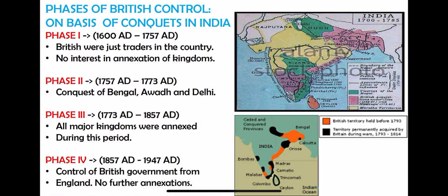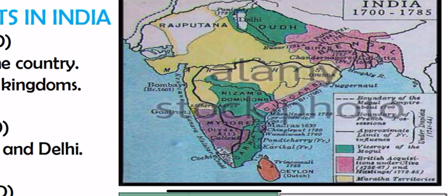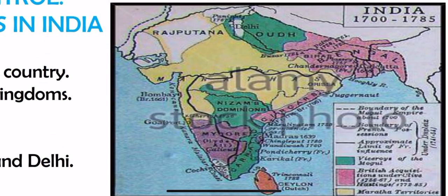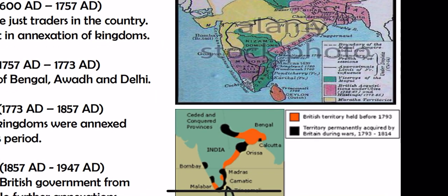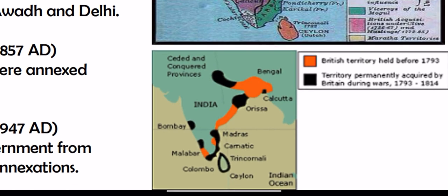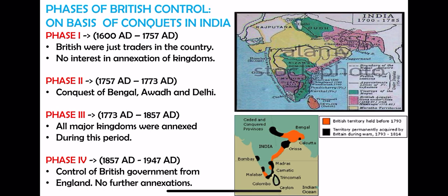If we look at the map of India carefully, Awadh, Bengal and Delhi were already with the British — they didn't need to annex those. Now the British still needed to conquer Nizam, Mysore, Sirkars, and all the areas of Karnataka. All these annexations happened between 1773 to 1857. In this map you can see all the British territories they annexed. This was the most important third phase, in which maximum annexations occurred.